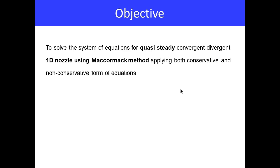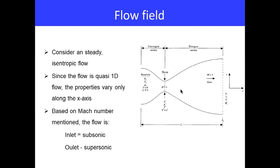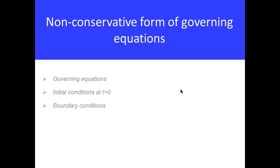The flow field we're considering is that the subsonic reservoir side is connected to the convergent section, then the throat at which the Mach number is one, and then there is a divergent side. We are considering a steady isentropic flow where the inlet is subsonic and the outlet is supersonic. Now let's look at the non-conservative form of the governing equations.